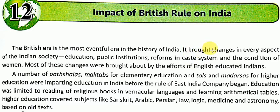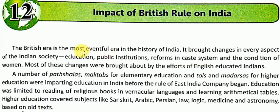Before the British, there were many rulers in India who ruled in different territories, but the British controlled the whole subcontinent. This brought changes in every aspect of Indian society — they affected every section, like education, public institutions, reforms in the caste system, and the condition of women. Most of these changes were brought about by the efforts of English-educated Indians who wanted to change the society of India.